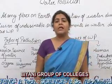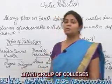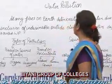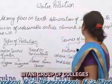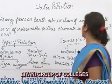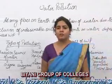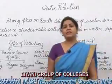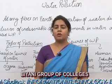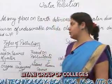The pollution which we find in water is water pollution. The proper definition of water pollution is: at any place on earth, deterioration of water due to inclusion of undesirable outside elements in water deposits is called water pollution. It means when deposits from outside mix with the water, it causes water pollution. There are various types of water pollution.